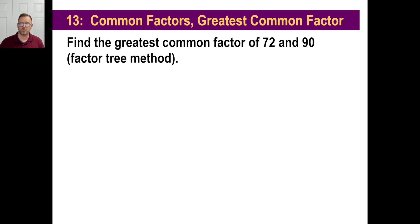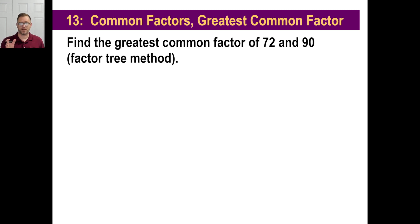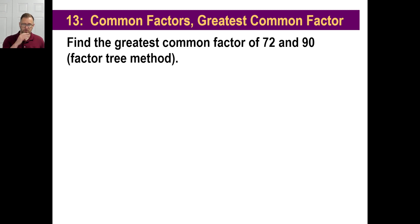So let's try 72 and 90. Pause it. Break down 72 on one side, break down 90 on the other side into prime factors. Then circle the ones that are common and multiply just those together. Pull them apart, go to the bottom, and multiply those all together — see what you get.